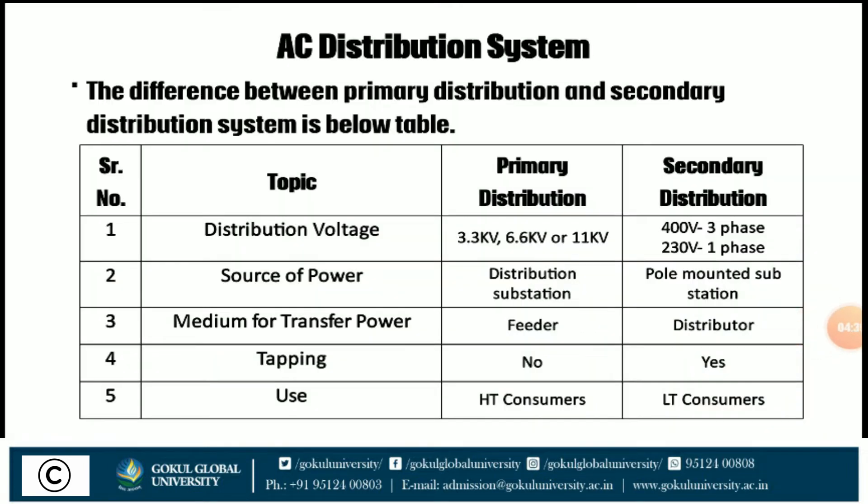Now we discuss about the difference between the primary and secondary distribution system. The first difference is distribution voltage: primary distribution uses 3.3 kV, 6.6 kV, or 11 kV, while secondary distribution uses 400 V for three-phase and 230 V for single-phase. The second difference is the source of power: for primary distribution it is the distribution substation, and for secondary distribution it is the pole-mounted substation.